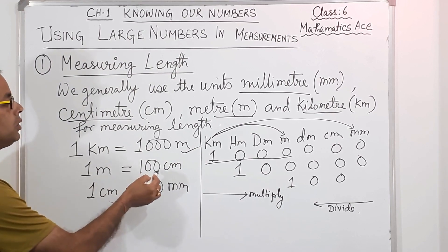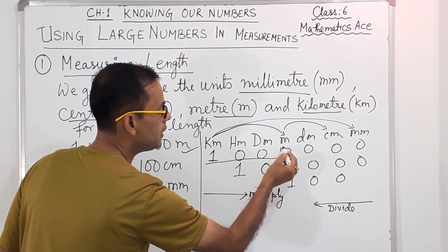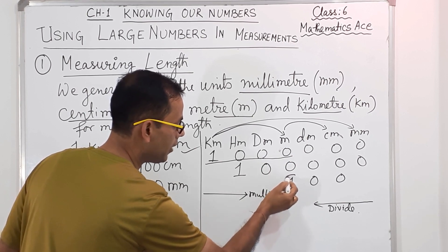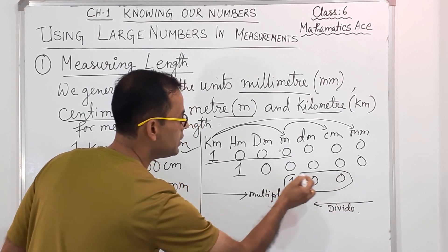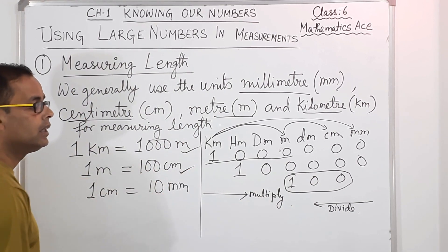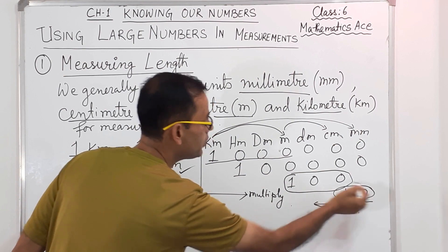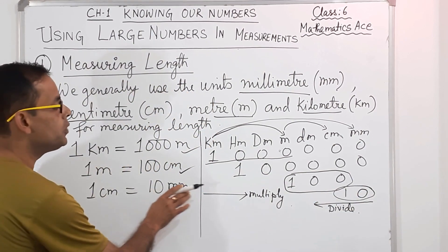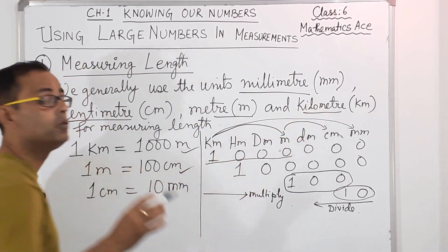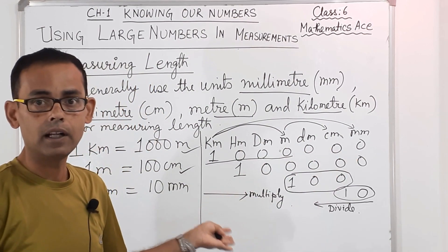Now 1 meter — going from 1 meter to centimeter, I will multiply 1 into 100 and it becomes 100 centimeter. If I want to go from 1 centimeter to millimeter, then I multiply with 10. So when we are moving from kilometer towards hectometer, decimeter, meter direction, we have to multiply. And if we want to come from millimeter to kilometer, we have to divide.